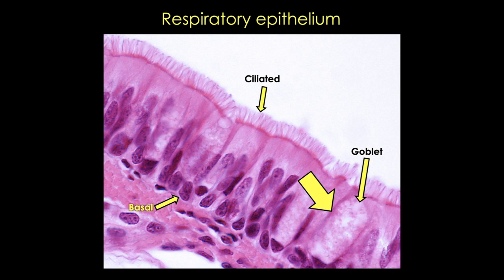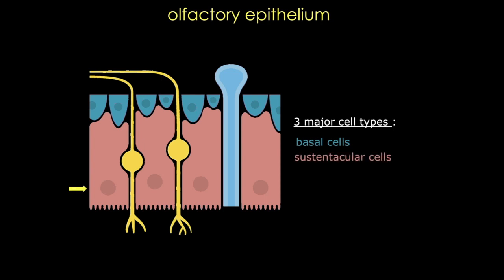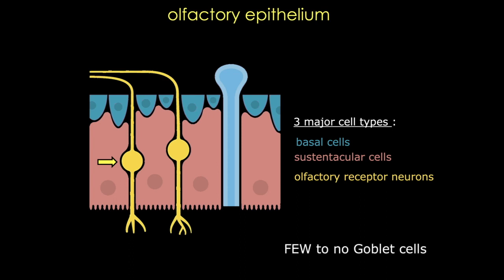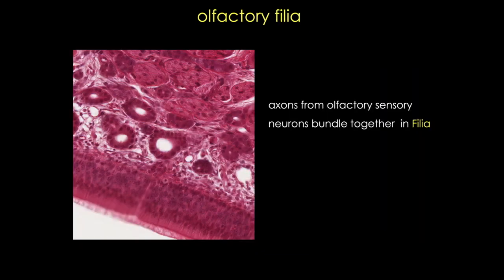Now let's compare to olfactory epithelium. This cartoon shows the three cell types of olfactory epithelium: basal cells, a special support cell called the sustentacular cells, and a lot of olfactory receptor neurons, which are ciliated cells. Unlike the respiratory epithelium, olfactory doesn't have many, if any, goblet cells. Instead, they contain those sustentacular support cells, and those cells have nuclei that tend to line up at the apical surface of the epithelium. In general, the appearance of olfactory epithelium is taller compared to respiratory. There are a lot more cells and cell nuclei visible in this epithelium, and those cells are skinnier or more spindly than the cells in the respiratory epithelium.